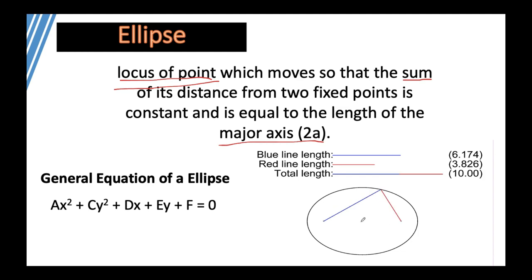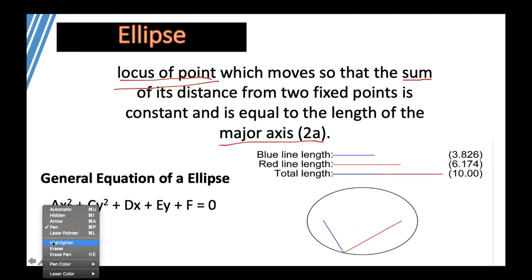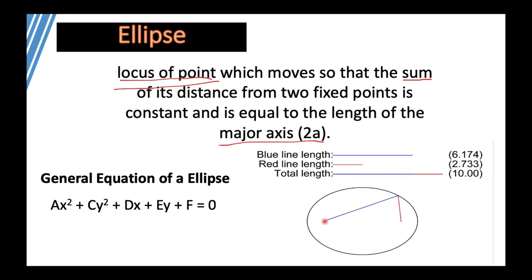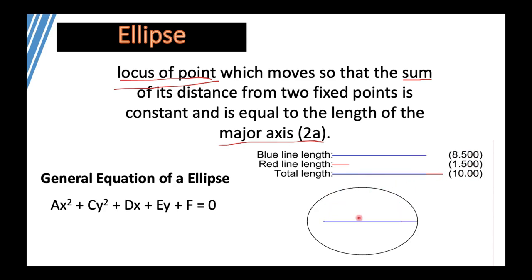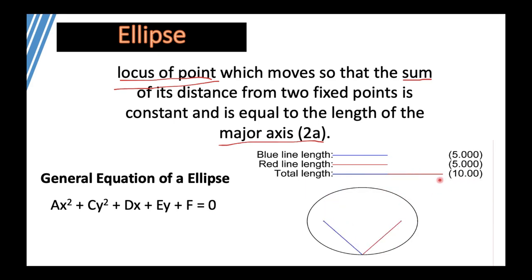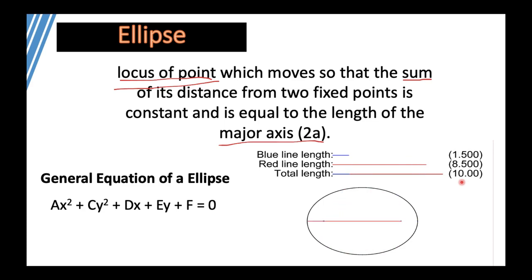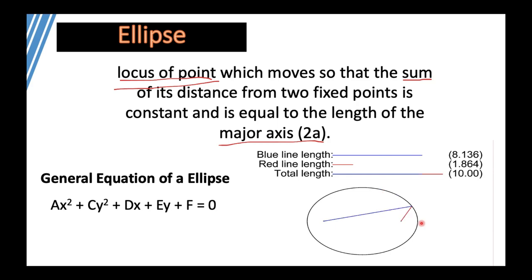Observe the figure so we can better understand the definition. There are two points here — this point and this point. These points are called foci, the plural form of focus. As you can observe, the total length does not change. The total length is just the blue line plus the red line at a certain point. The sum of those two line segments is constant — that is what is meant by 'the sum of its distances from two fixed points called foci is constant.' The major axis will be explained on the next slide.